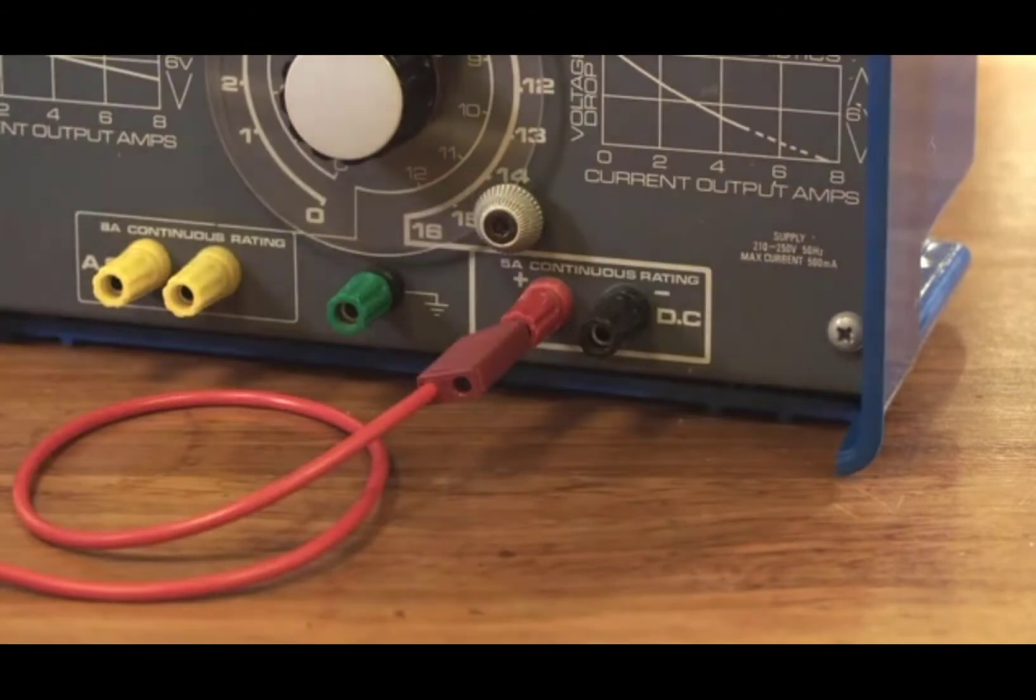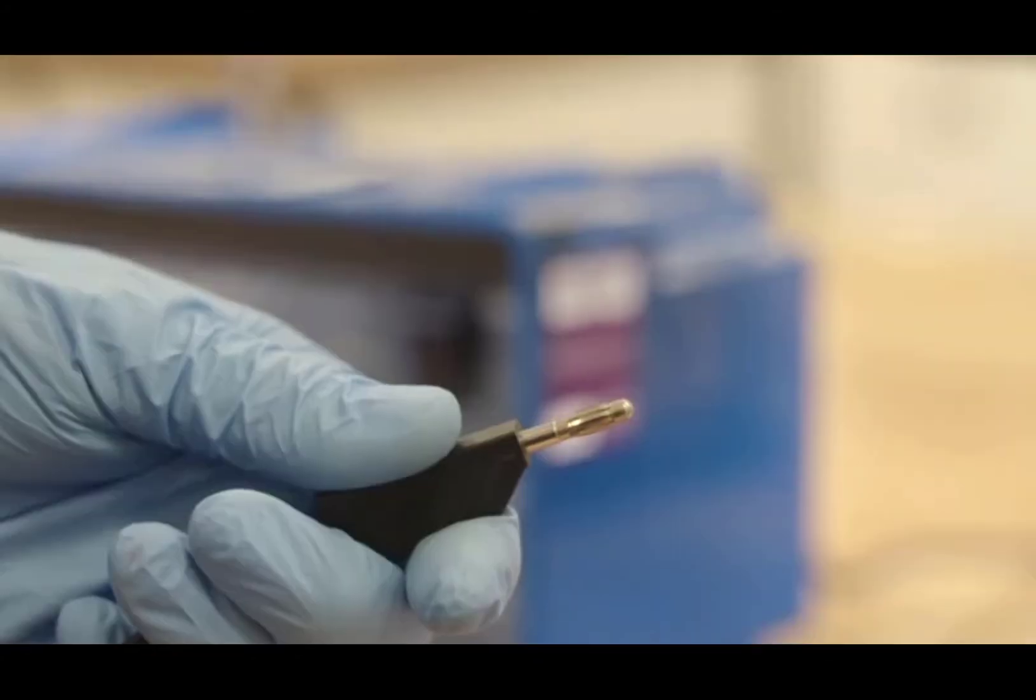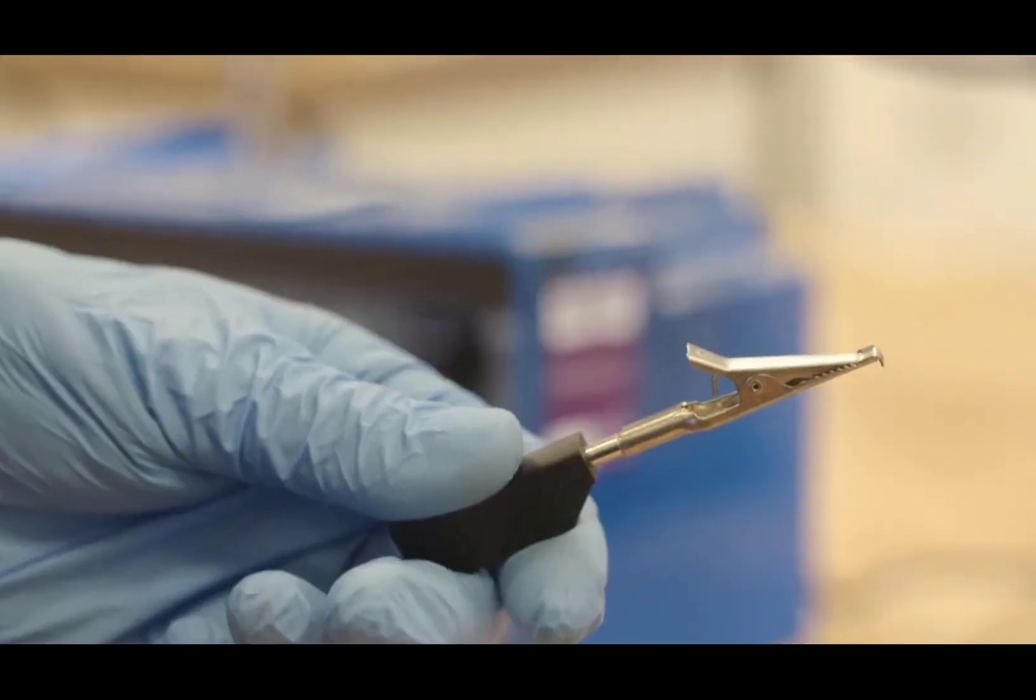To measure how the resistance of a wire changes, the current, which is measured in amperes, and the potential difference, which is measured in volts, should be recorded. Wires are used to connect the voltmeter and ammeter to the power supply.